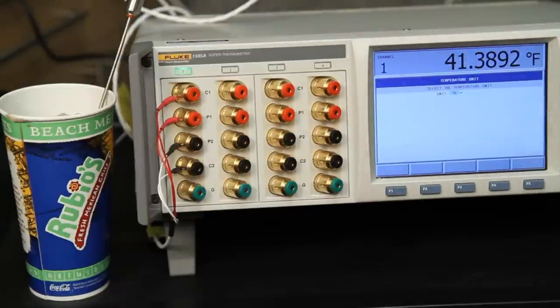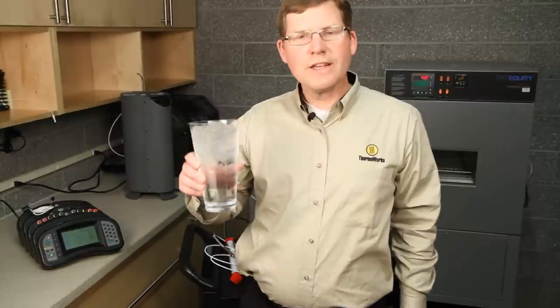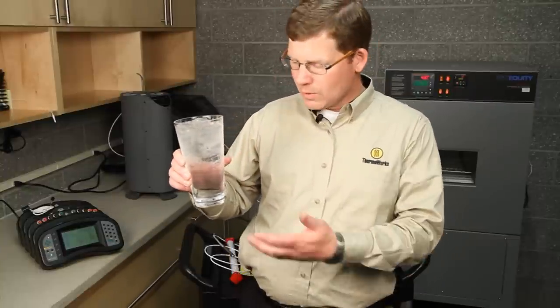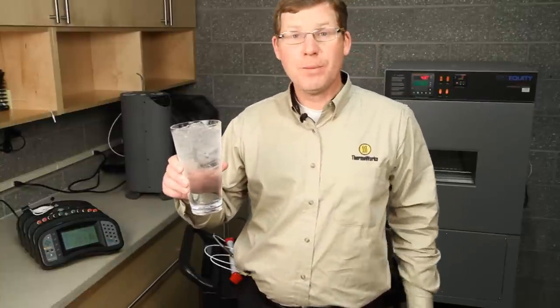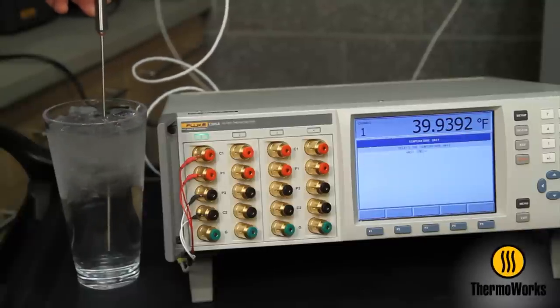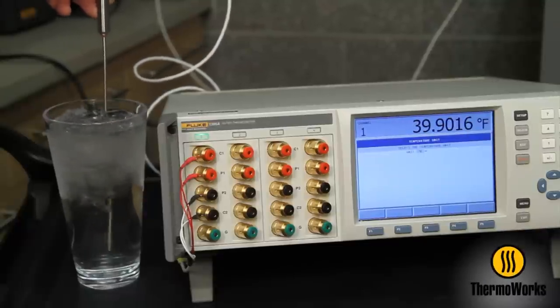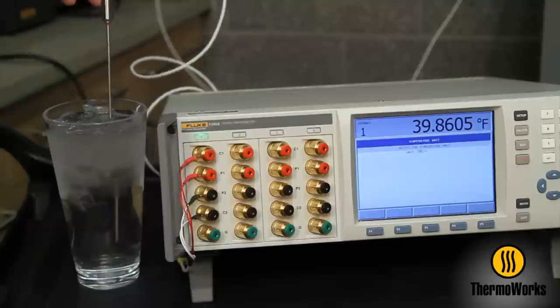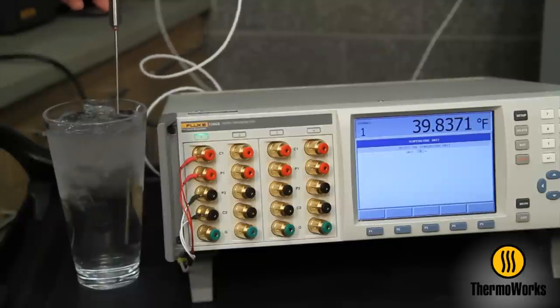Not even close. Then again, let's take a look at a glass of ice water. This is a regular glass of ice water. We added cold water to a pile of ice. Should be about 32 degrees Fahrenheit, right? Let's take a look. Look at that, more than seven degrees off.